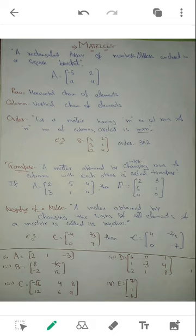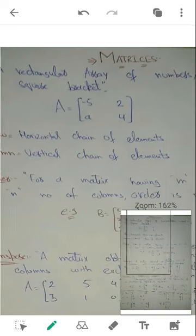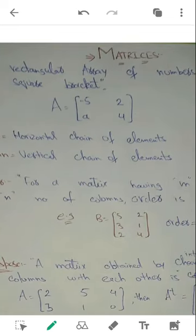A matrix is basically a rectangular array of numbers or letters enclosed in a square bracket. For example, numbers like minus 5, 2, 4 or a letter like small 'a' enclosed in brackets — this becomes a matrix.